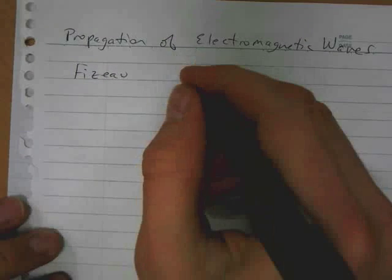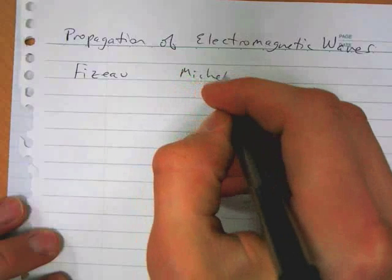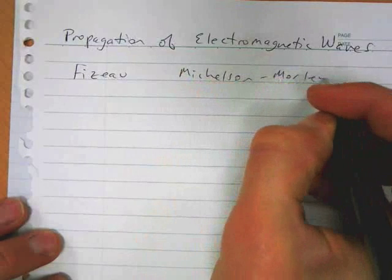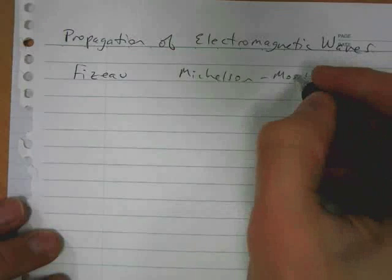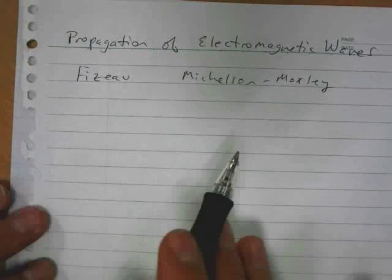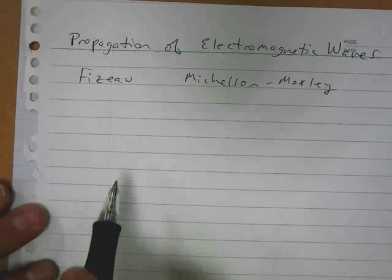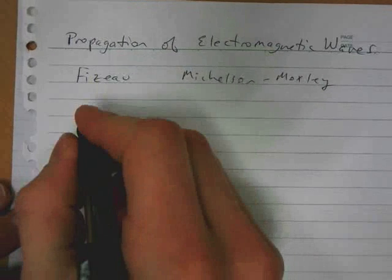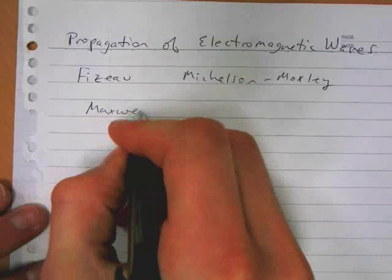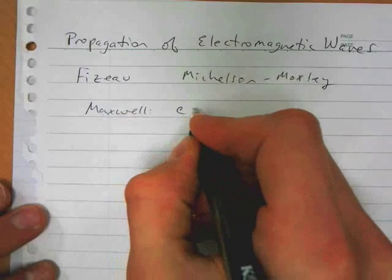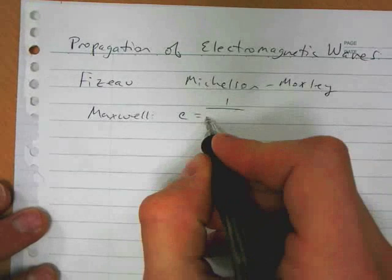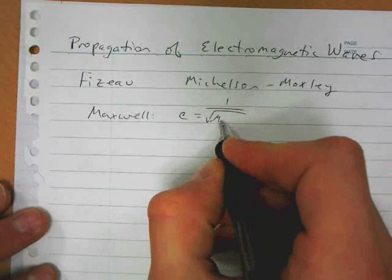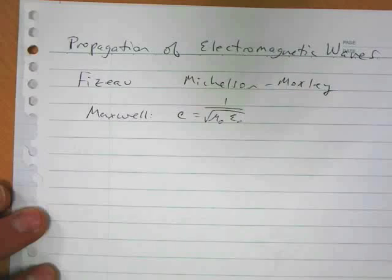Later on, Michelson and Morley did another experiment that increased the accuracy of what we know the speed of light to be. Actually, well before any experimental evidence showed up, Maxwell theoretically said that the speed of light was related to two physical constants we've already talked about, and he calculated that the speed of light was 1 over the root of mu naught epsilon naught.